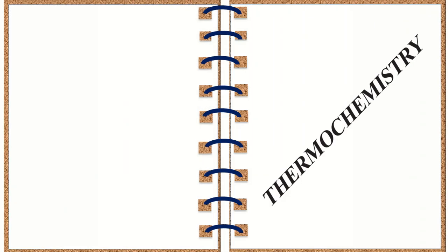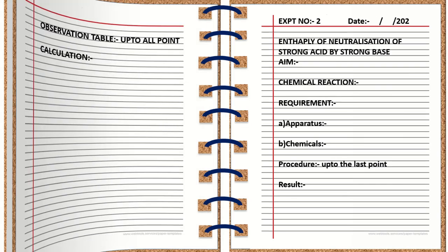Let's see the next practical: Thermochemistry, Experiment Number 2. The date should be included. The title should be included — Enthalpy of Neutralization of Strong Acid by Strong Base. After that, write the aim, chemical reaction, requirements such as apparatus and chemicals, and the procedure up to the last point. Then the result. All these points should be on the right-hand side of the page. The left-hand side should contain the observation table and all points, followed by the calculation.